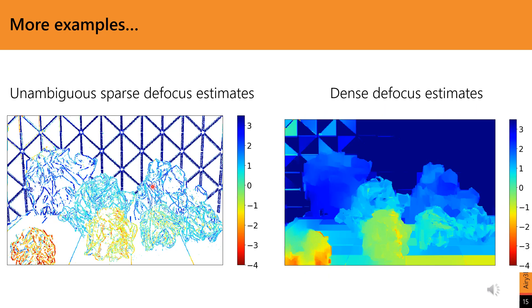To the left, we can see the defocus estimates for the paper balls with the corresponding dense estimates to its right. The defocus estimates increase from bottom to top in trend with the depth.